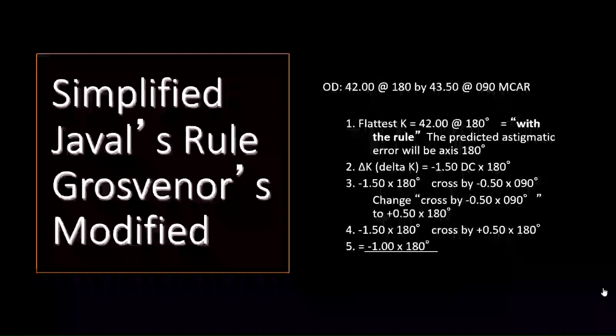Let's look at some examples. Here's a patient whose corneal keratometry is 42 at 180 by 43.50 at 90. The first step is determine which the flattest meridian is. In this case, the 42 at 180, so that means the cornea is with the rule, and our predicted corneal astigmatism is at axis 180. Now the difference between them, or the delta K, is 43.5 minus 42, or 1.5 diopters of corneal astigmatism at 180.